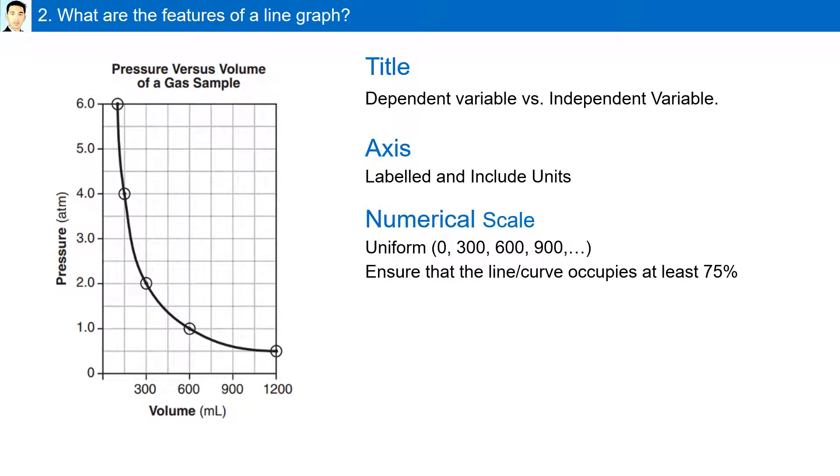Numerical scale: they must be uniform in increments of, for example, 0, 300, 600, 900, and so on. Ensure that the line or curve occupies at least 75% of your graph space.